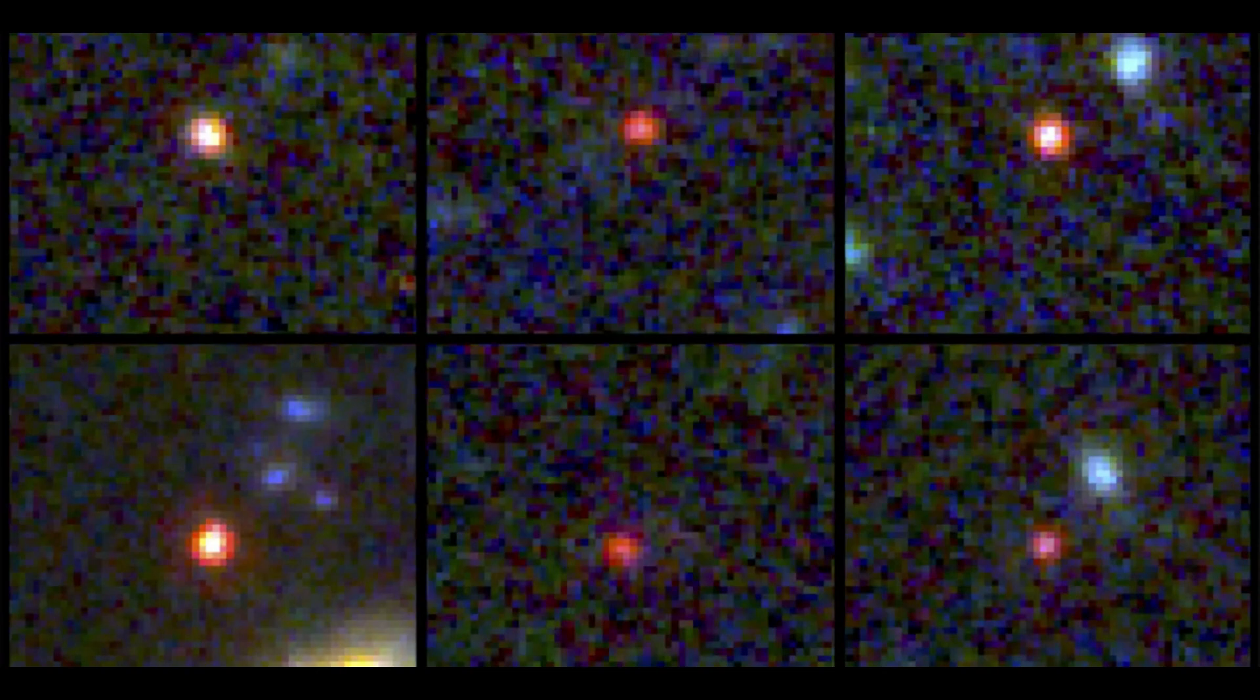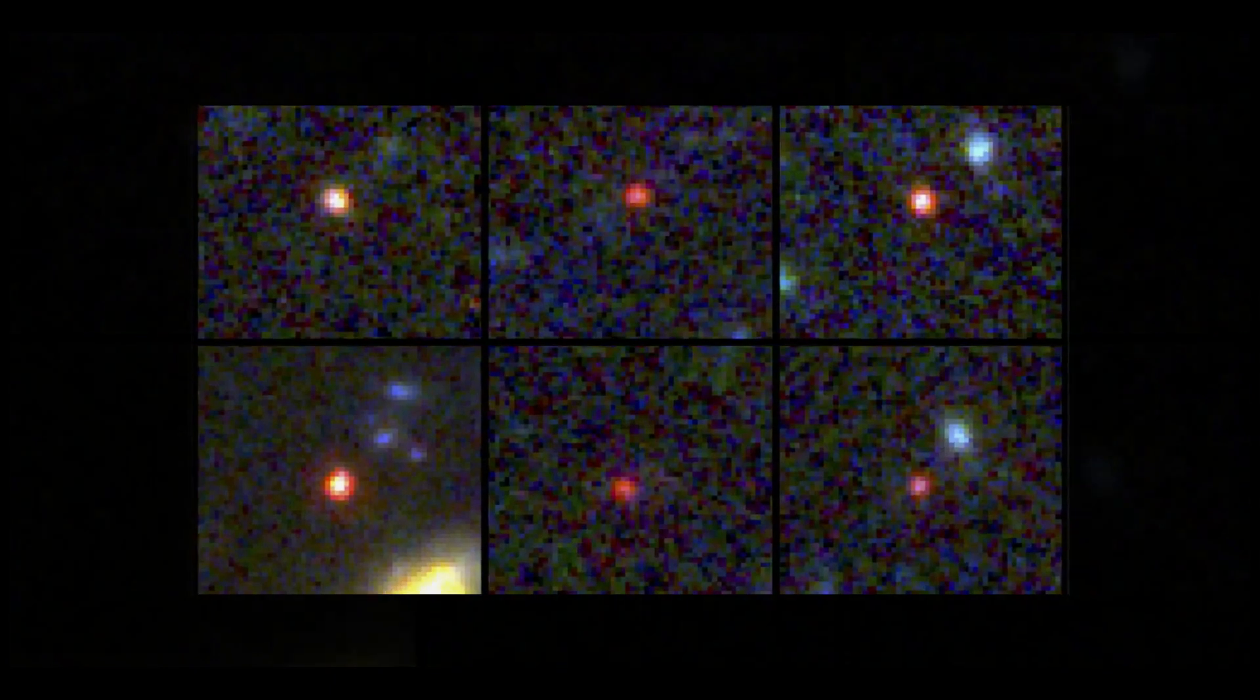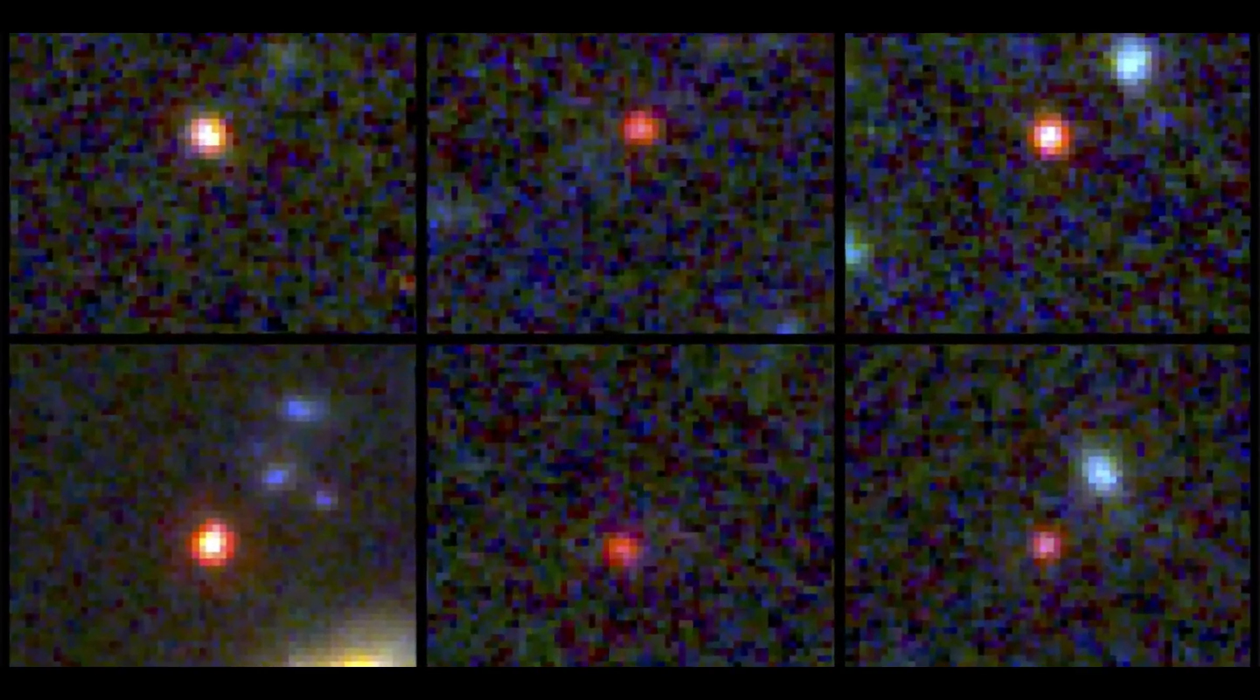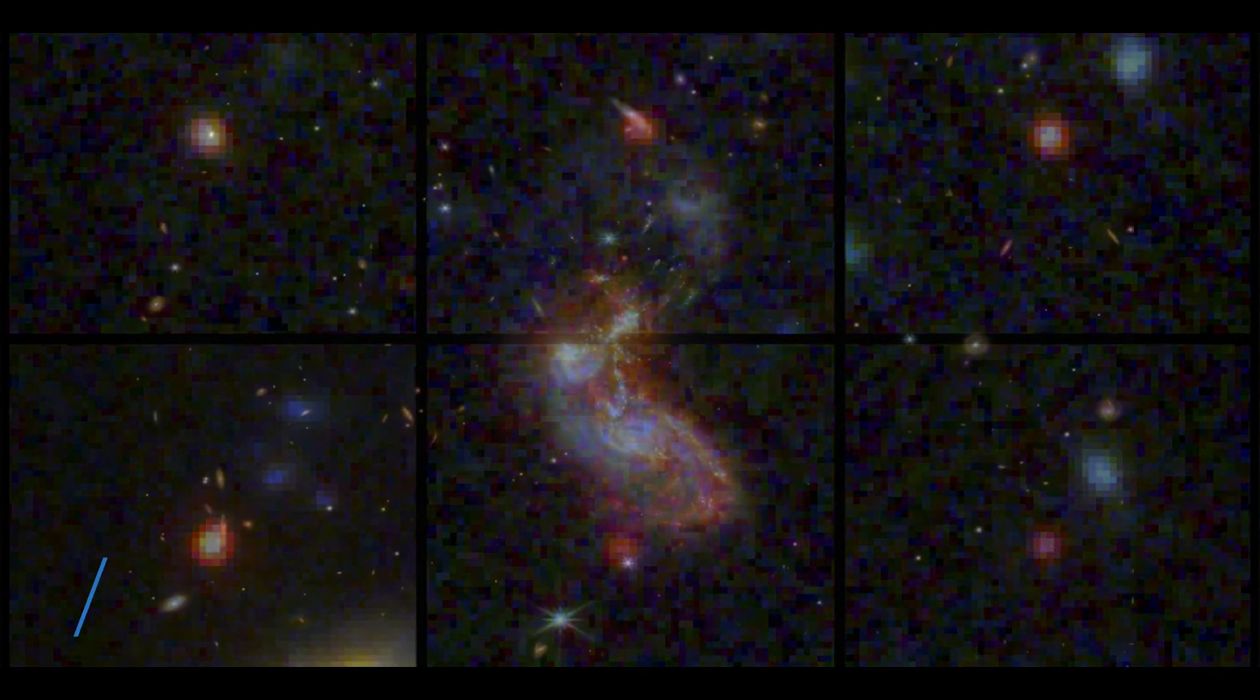Such early galaxies are not remarkable in and of themselves. Astronomers predicted that the first star clusters would form soon after the universe emerged from its so-called dark ages, the first 400 million years of existence when space was filled with a dense fog of hydrogen atoms.